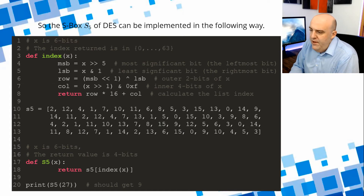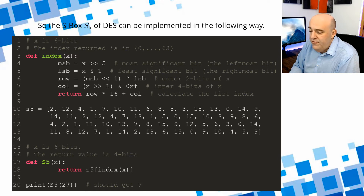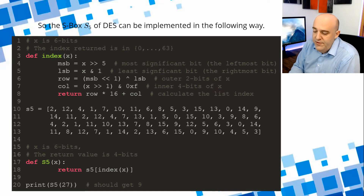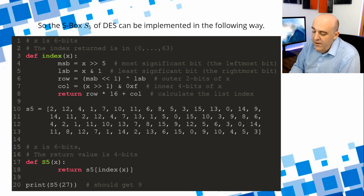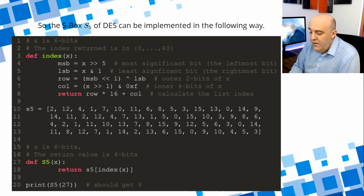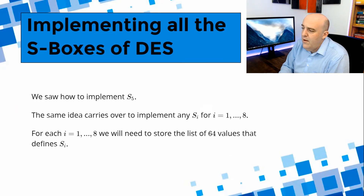Here's how we implement S-box S5 of DES. We have that index function. We call lowercase s5 the list of integers given in the table, and capital S5 for the function itself. Given a value X that is 6 bits — an integer between 0 and 63 — the return value is a 4-bit integer between 0 and 15. Capital S5 of X returns lowercase s5 at index of X, giving the proper location in the table. As we saw, S5 of 27 should give back 9 in base 10.